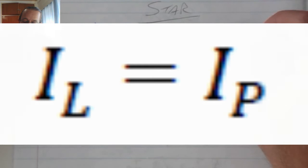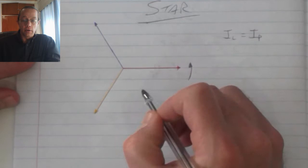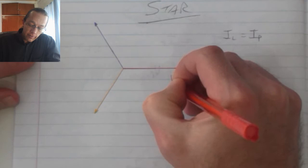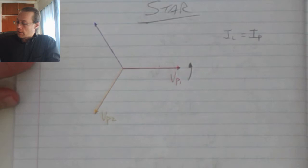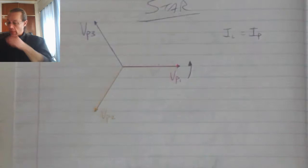In a star system, because of the configuration, we find that the line current is equal to the phase current, and we find that the voltages or the phase voltages on the three coils are all equal. So my voltage on phase one is equal to the voltage on phase two, and that is equal to the voltage on phase three.